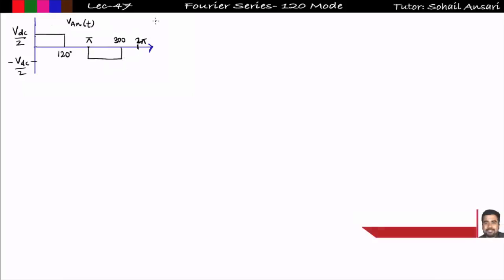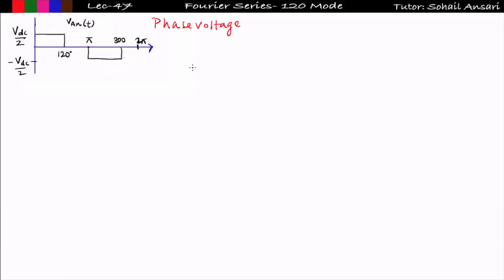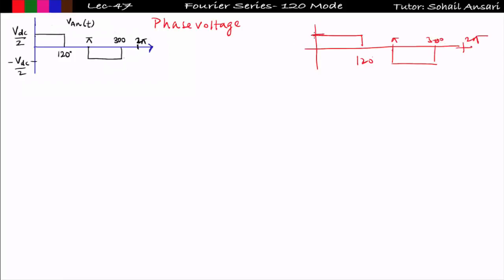This is the waveform of phase voltage in 120-degree conduction mode. Is this an odd function, even function, or neither? It is neither even nor odd, so we have to find both an and bn. Note that this waveform is actually the same as the line voltage in 180-degree conduction mode. In 180-degree mode the waveform spans from 120° to π, then π to 300°, up to 2π, with a peak value of Vdc. Here the peak value is Vdc/2 — that is the only difference.